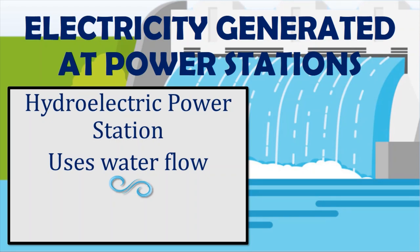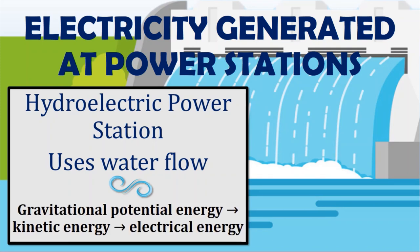Next is the hydroelectric power station, which captures the energy of falling water to generate electricity. A turbine converts the kinetic energy of falling water into mechanical energy, then a generator converts the mechanical energy from the turbine into electrical energy. This can be simplified as: gravitational potential energy converts to kinetic energy, which finally converts to electrical energy.